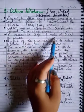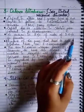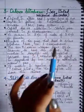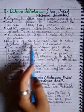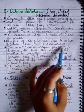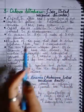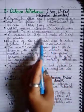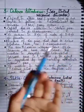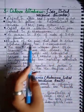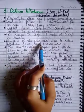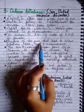Colorblindness occurs in 8% of males and only 0.4% of females. This is because the gene responsible for colorblindness is located on the X chromosome. Males have XY chromosomes and females have XX chromosomes, so the lower frequency in females is because their second X chromosome can mask the recessive gene.